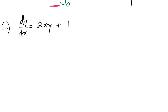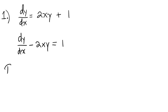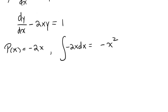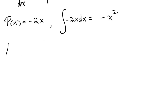We will move the 2xy to the left-hand side. We get dy/dx minus 2xy is equal to 1. We know that our p(x) is equal to minus 2x, and if we take the integral of minus 2x dx, what we get is minus x squared. Our integrating factor, mu of x, will equal e to the minus x squared.